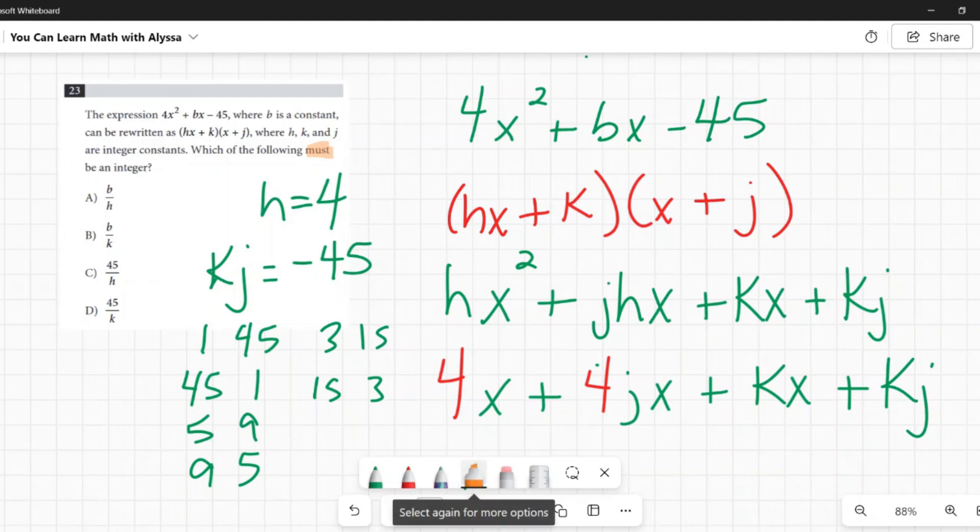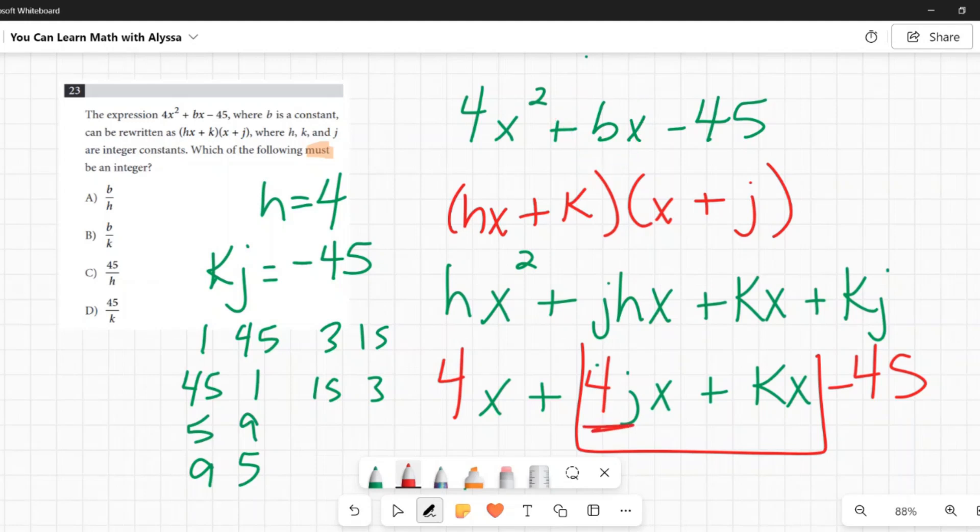k is 45 and j is 1. The only other options are 5 and 9 or 9 and 5, and 3 and 15 and 15 and 3. So those are my integers that multiply to 45. And again, that negative can be anywhere, just as long as one of those is a negative. So I know that k times j is the same as negative 45. Now that I have all this functionality, I know that 4j plus k equals b because 4jx plus kx equals bx.